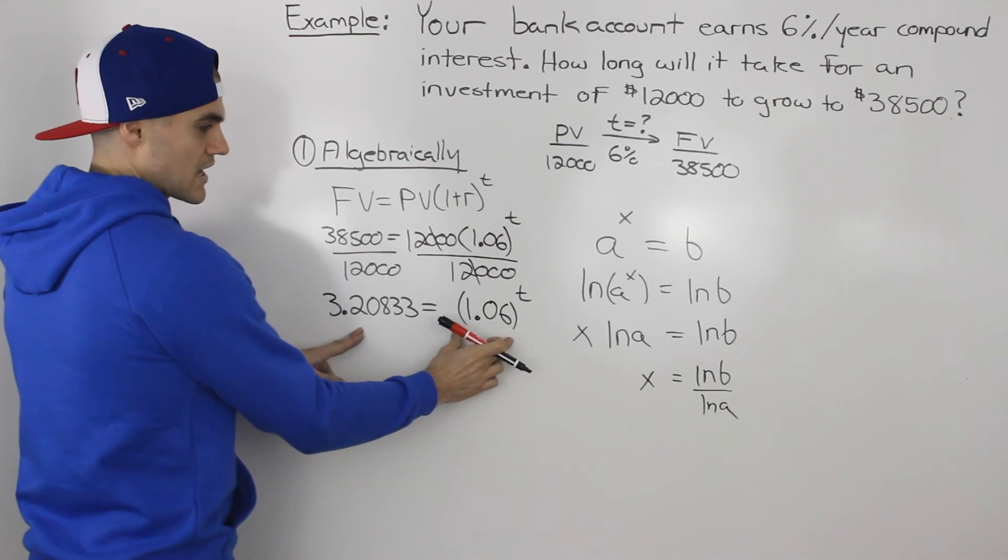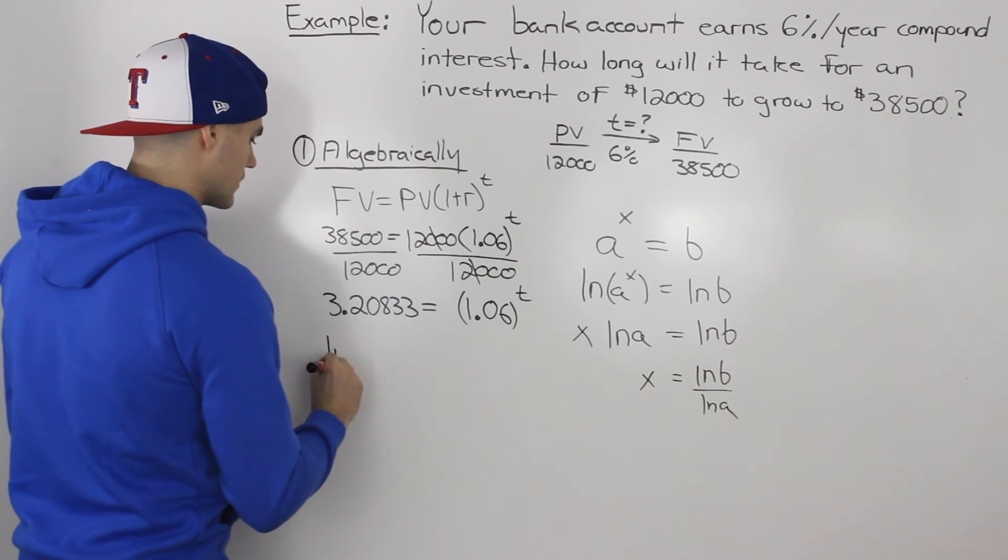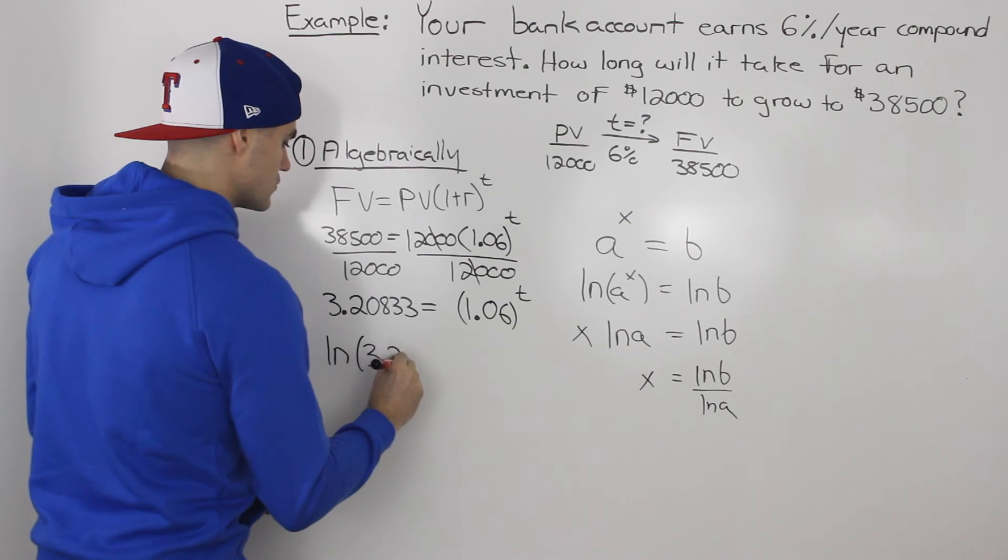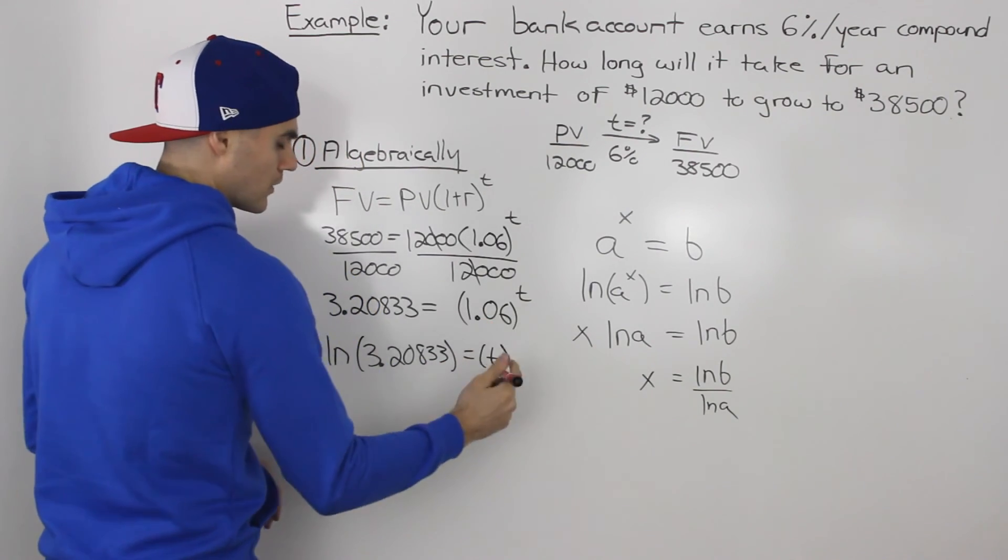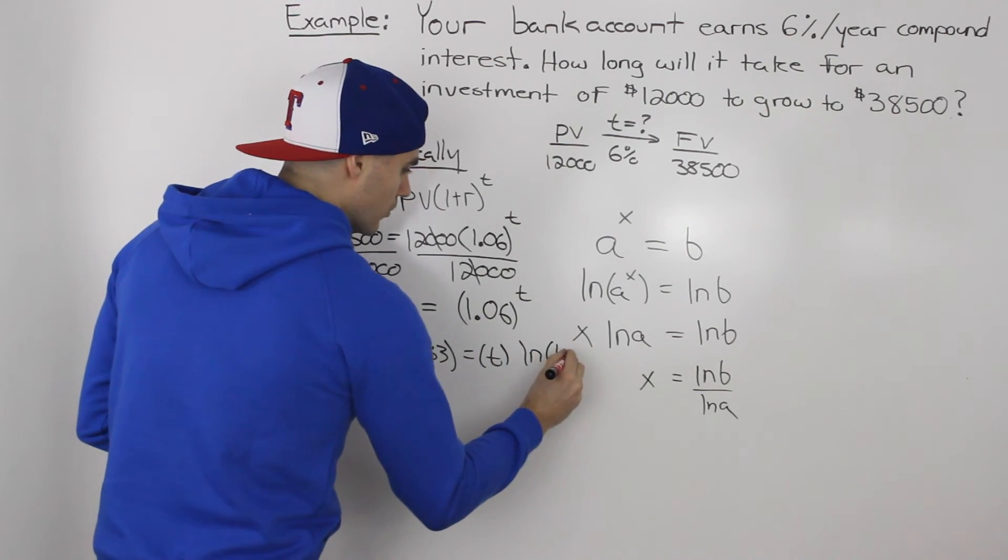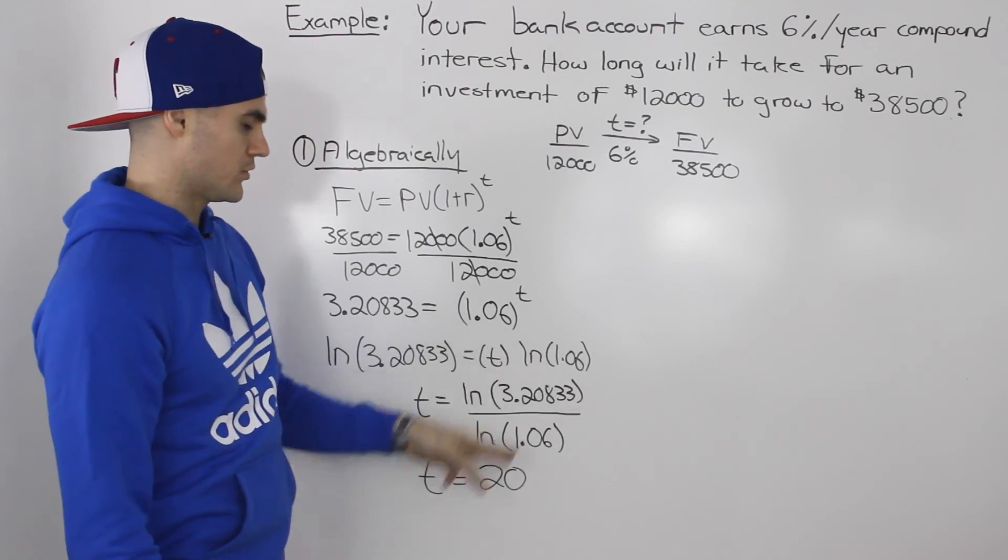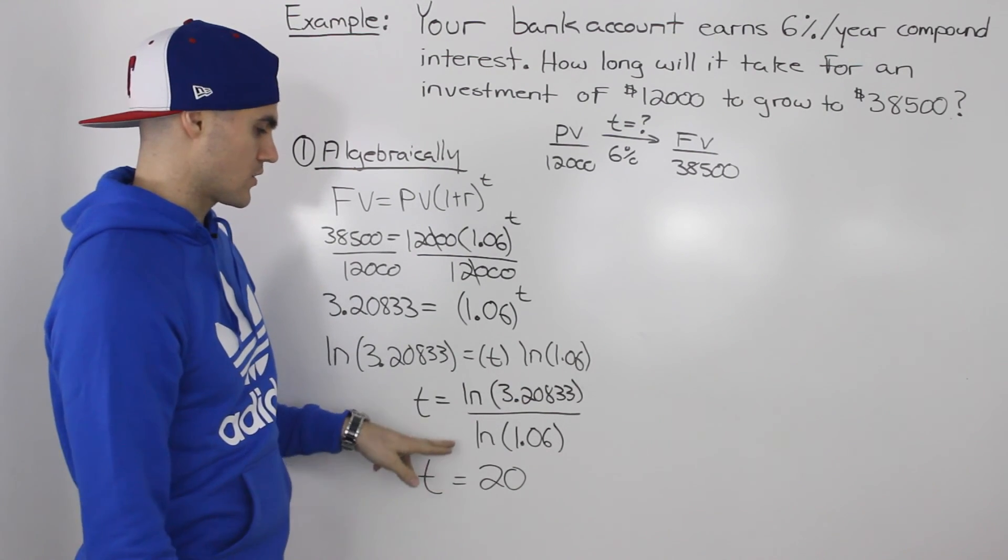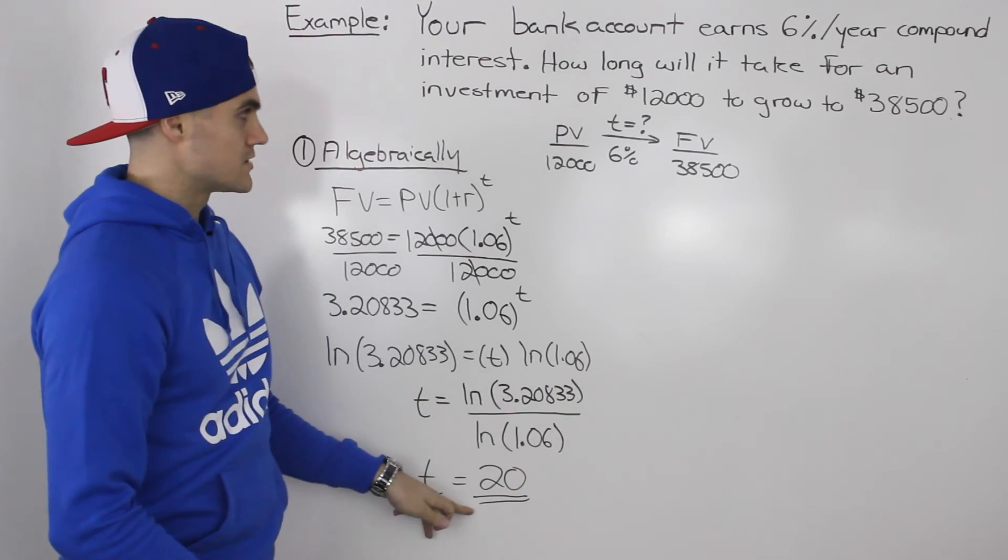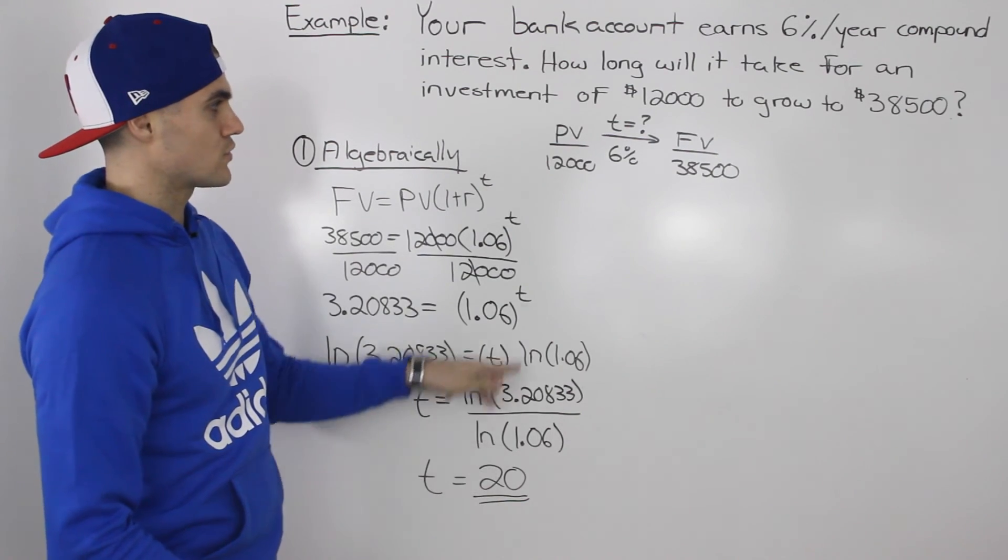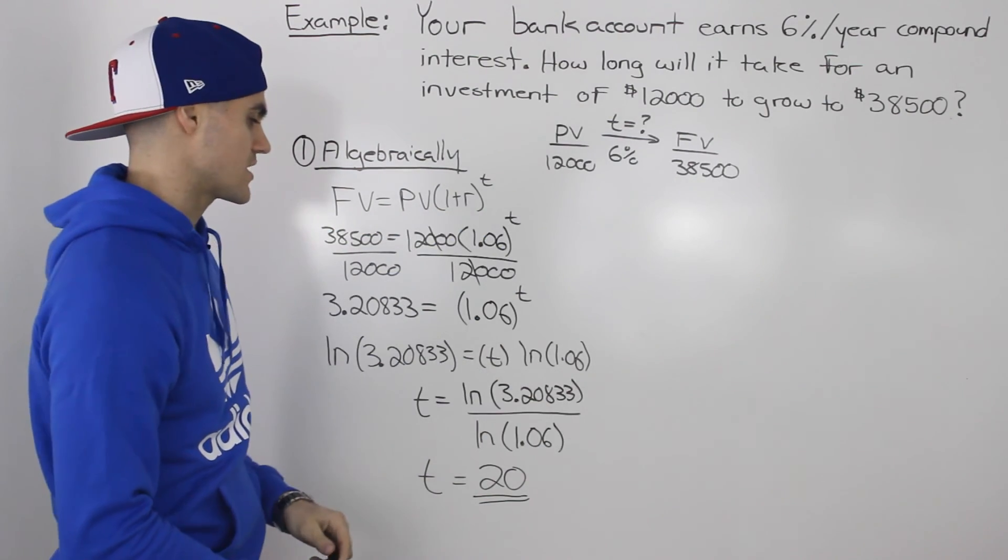We could take the logarithm of both sides, and then that t can come down. So either taking the logarithm or the ln, let's just do ln here. So we have ln of 3.20833. And that's equal to t, which we can bring down when we ln the 1.06. So then isolating for that t, we would divide both sides by ln of 1.06. So ln of 3.20833 divided by ln of 1.06, and we would get t of 20. So it would take 20 years for $12,000 to grow to $38,500 if we're investing at 6% compound interest.